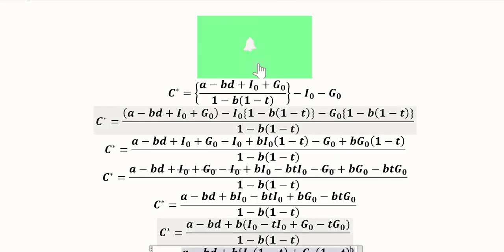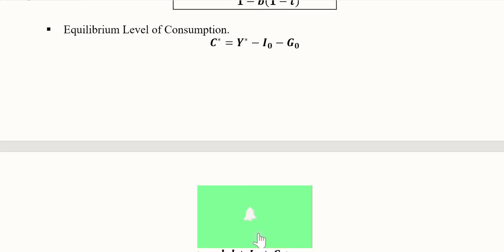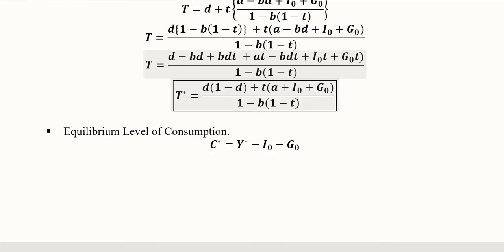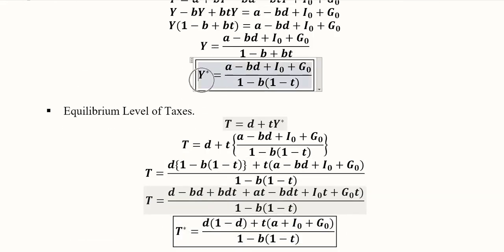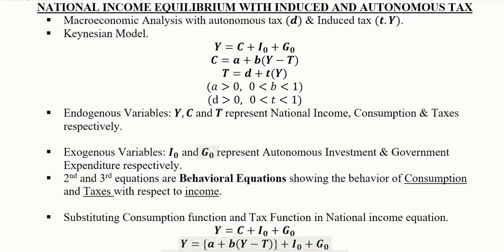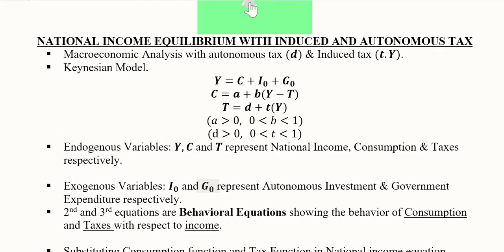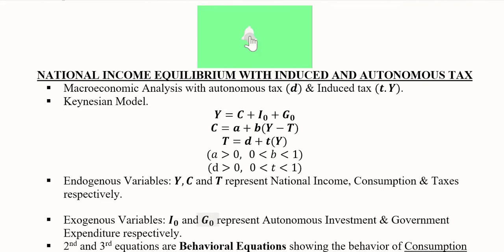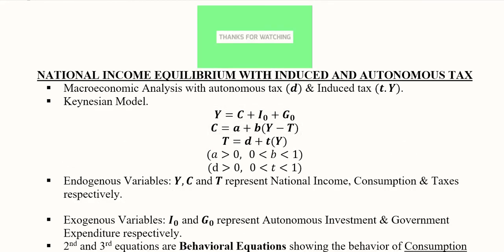Before finding C*, we found the equilibrium level of tax T*, and before that the equilibrium level of national income Y*. This completes a comprehensive analysis of national income equilibrium with both induced and autonomous taxes.